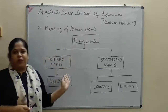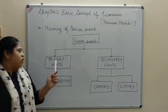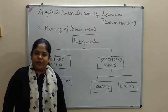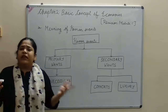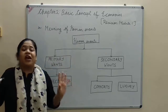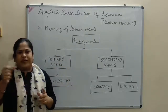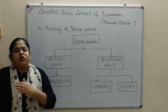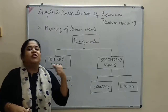Human wants are of two categories: primary wants and secondary wants. Primary wants are the necessities of life, which are the wants necessary for living — food, clothing, and shelter (Roti, Kapra, Makaan). These three things are required to maintain normal efficiency. Food is something that helps you maintain your normal efficiency and live a happy life. So primary wants are the wants of necessities: food, shelter, and clothing.